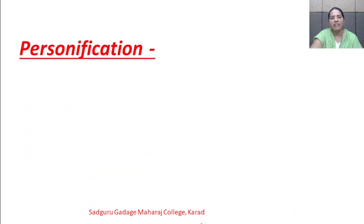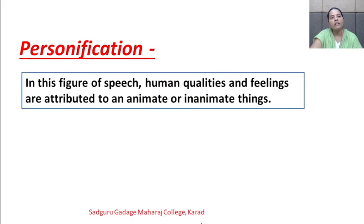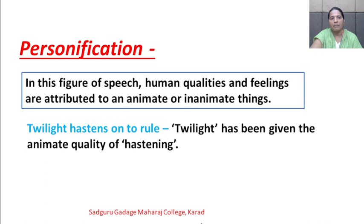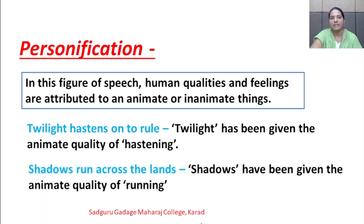The next poetic device is personification. In this figure of speech, human qualities and feelings are attributed to animate or inanimate things. Example: 'Twilight hastens onto rule' — here twilight has been given the animate quality of hastening. Next example of personification: 'Shadows run across the lands' — here shadows have been given the animate quality of running.